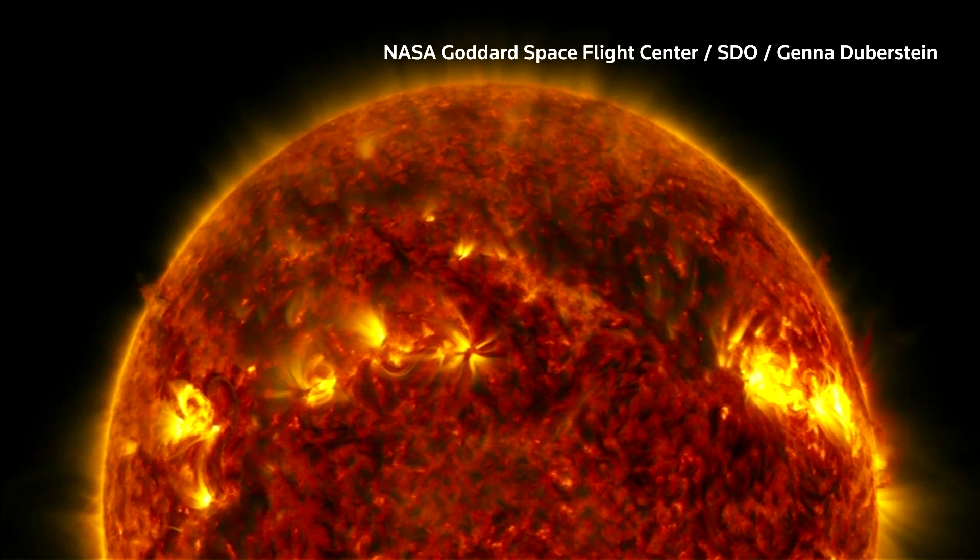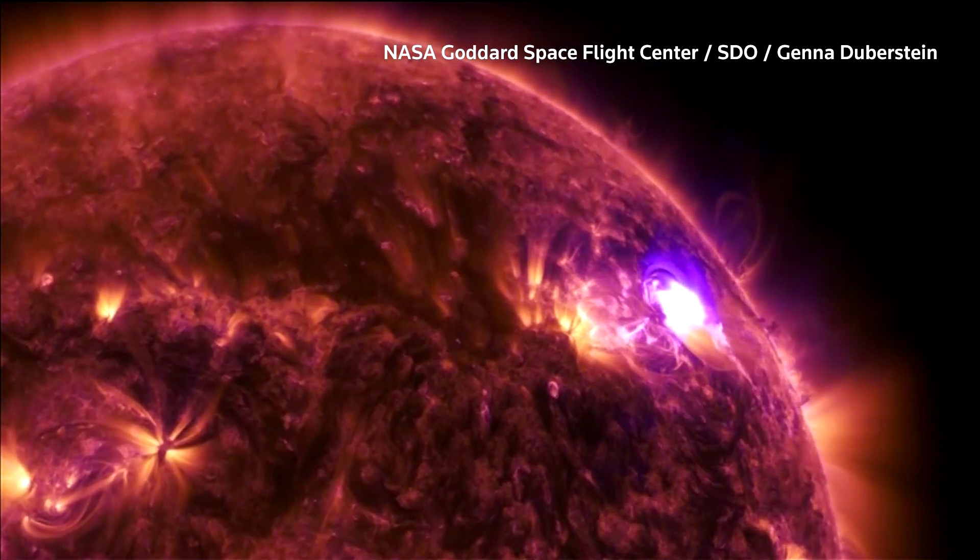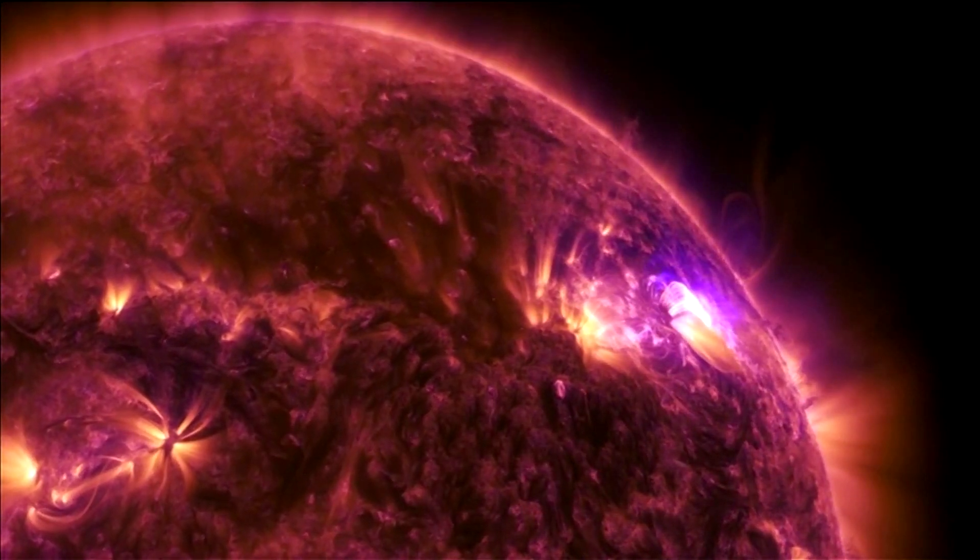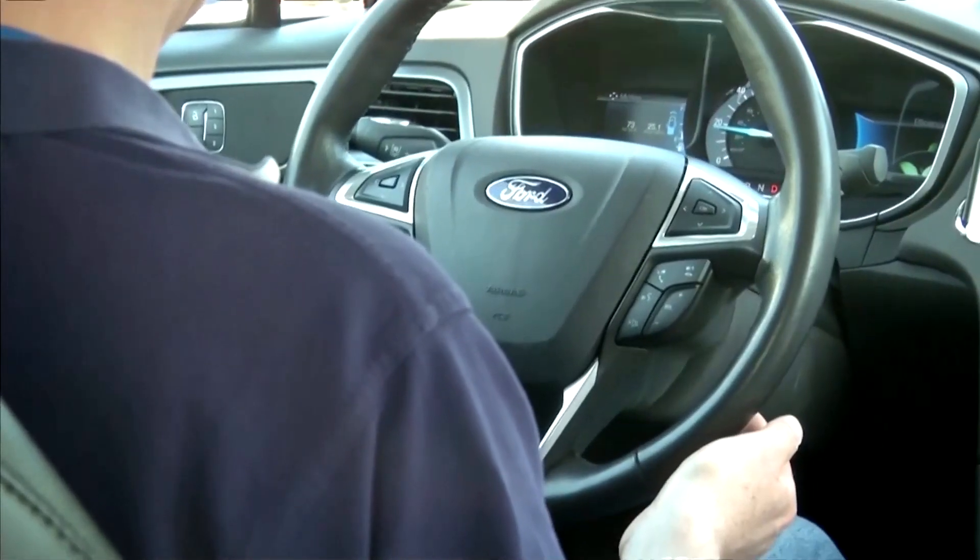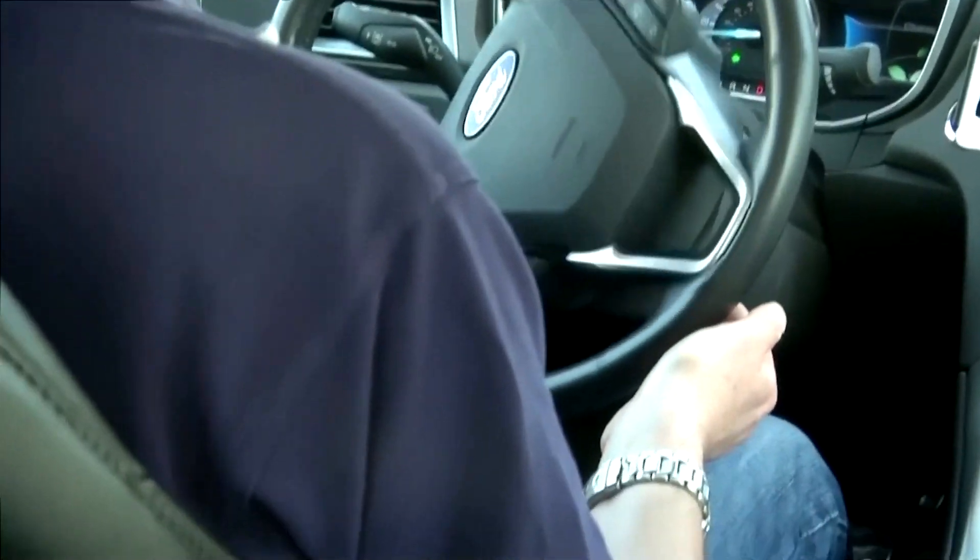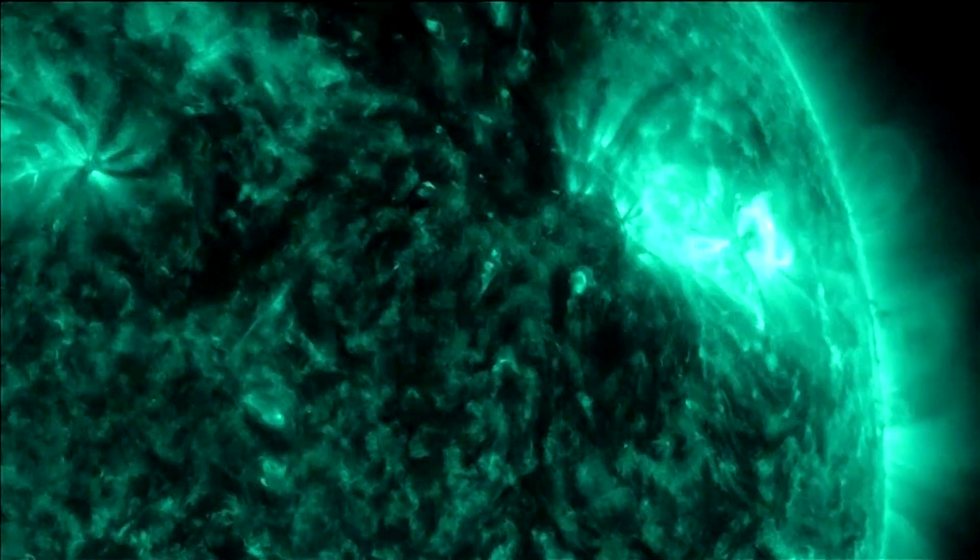The race is on to stop a storm on the surface of the sun from bringing down the internet or knocking out the control system of driverless cars on Earth. Such a solar flare scenario is becoming ever more likely as digital systems get smaller and more vulnerable to the effects of cosmic rays.